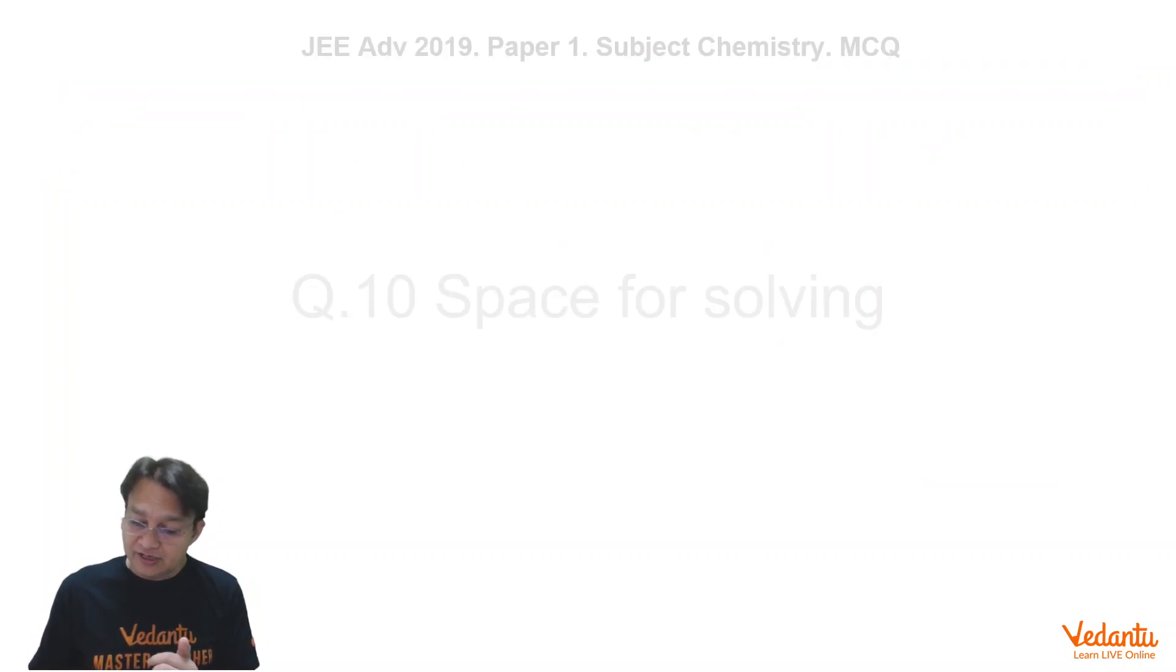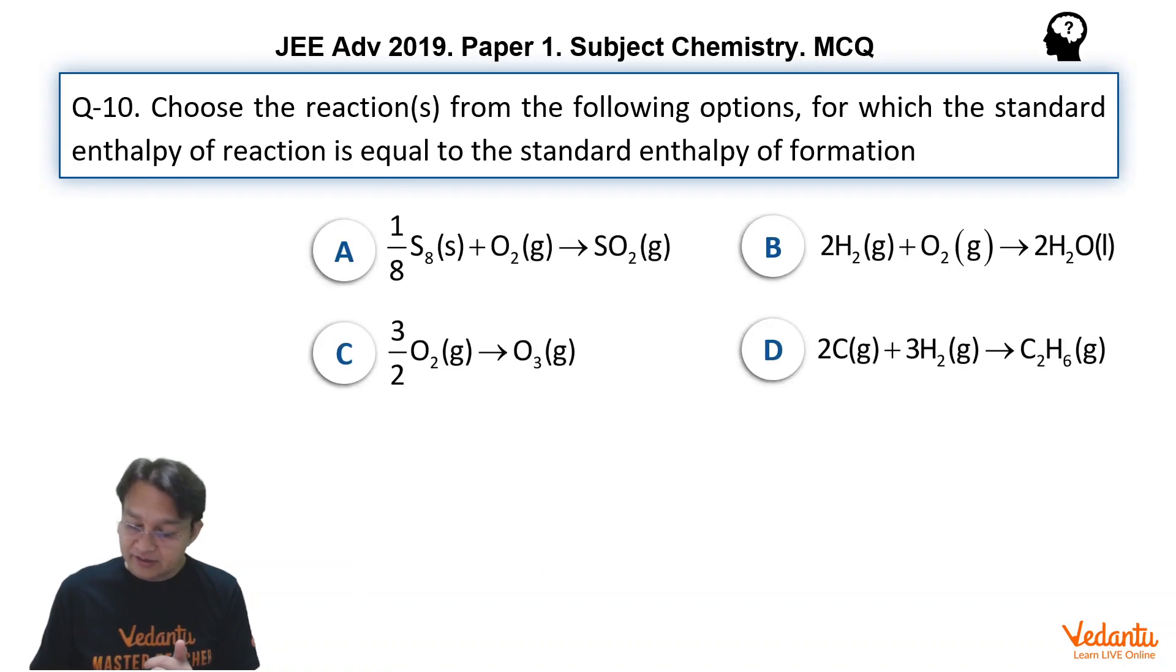So, looking into this definition, let us see what could be our answer. We see the four options carefully. The first option, 1/8 S8. That means it is fulfilling the criteria that elements should be there in the most stable state. Of course, S8 is most stable state.